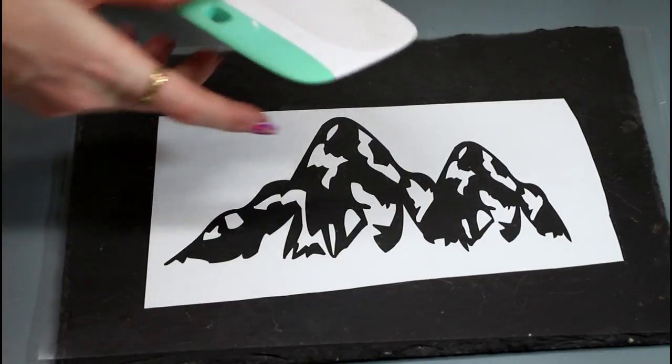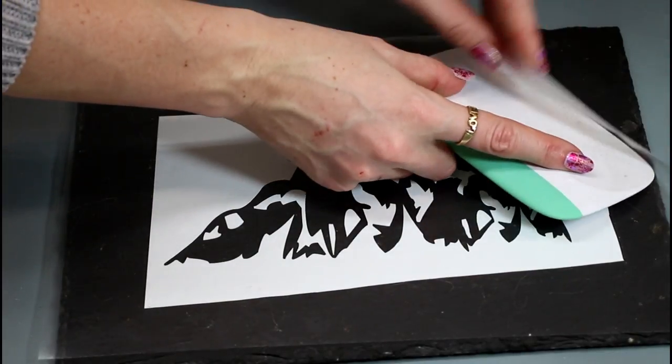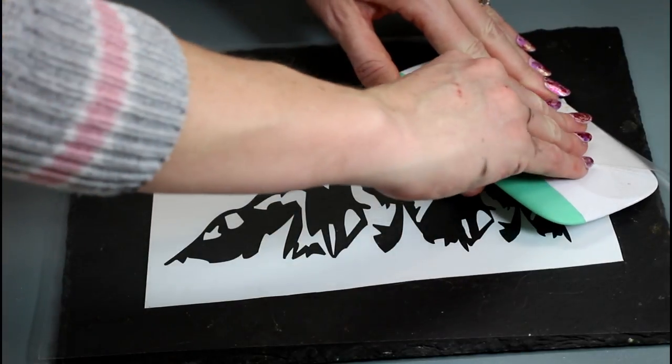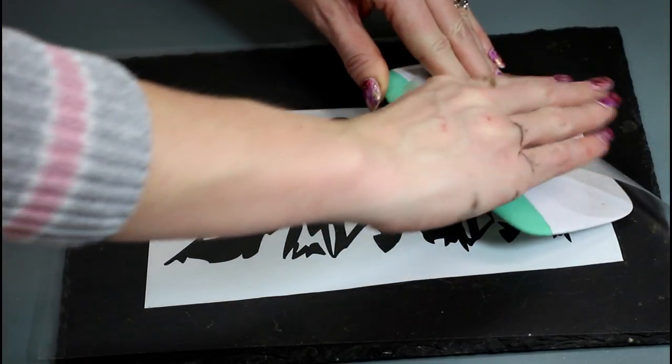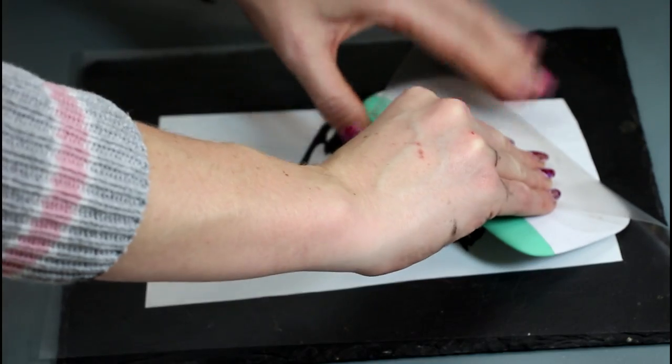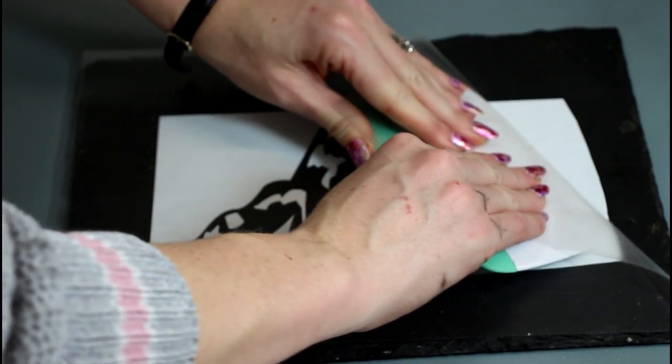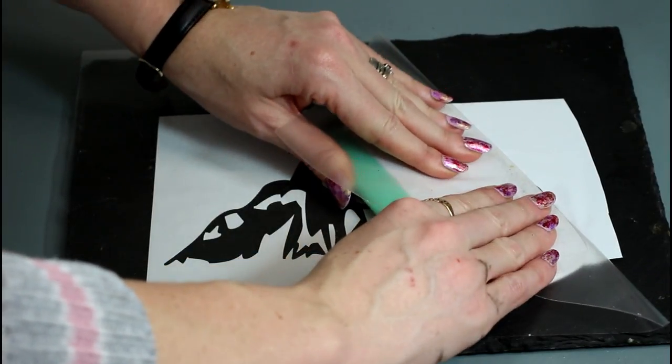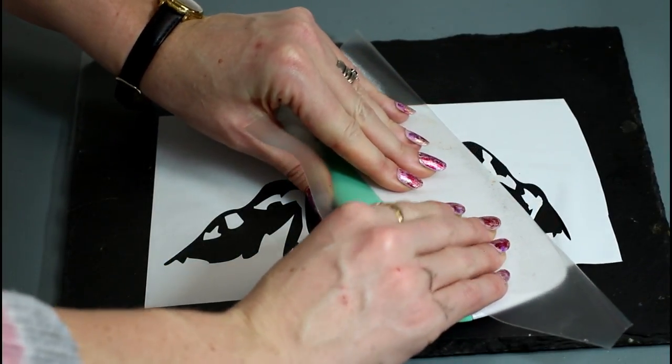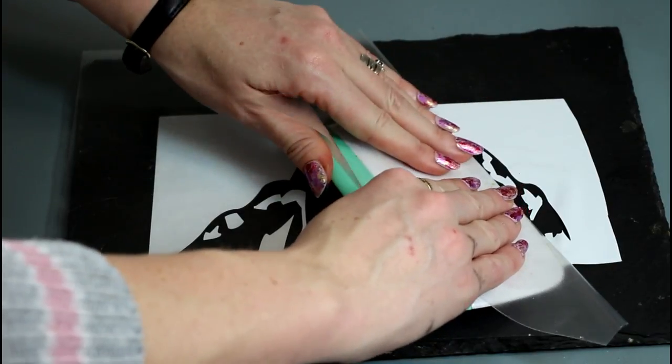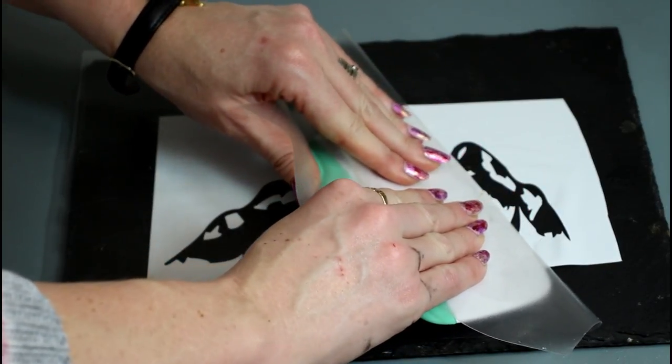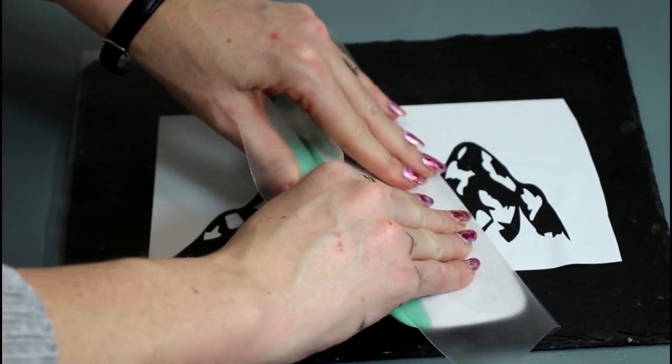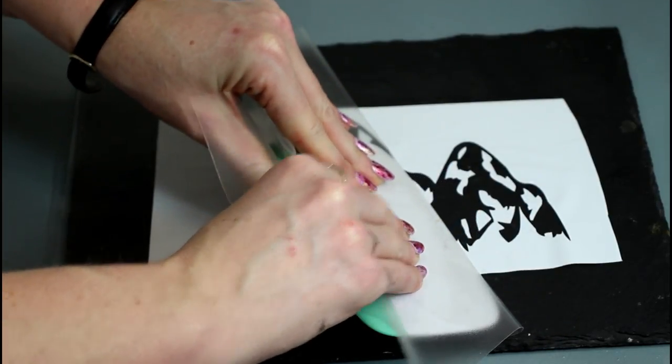So one trick that I always use is I place my transfer tape over my scraper and I pull back from my vinyl. And I find that this works really well. Now you'll see if there is some lift up here, but that's okay because we're going to fix that in a moment. For the time being, we just want our design to transfer as well as it can. And slate, as I say, is just one of those tricky kind of surfaces that you have to kind of play with a bit, but I find that this technique works really well.